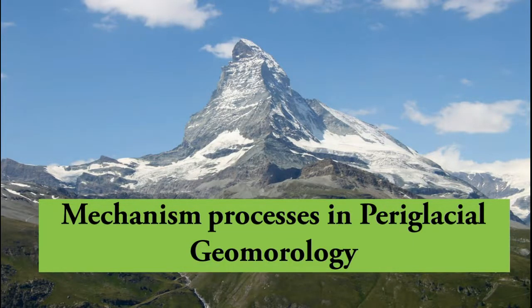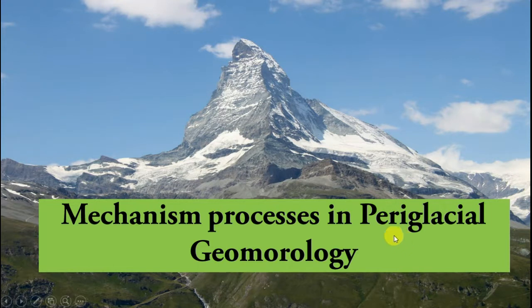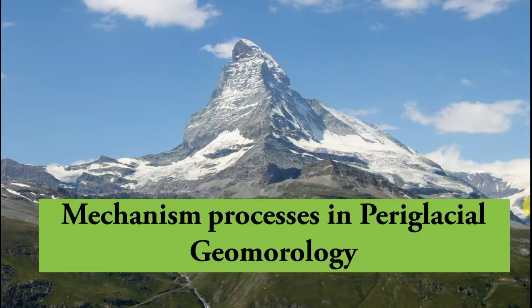In today's video we are going to talk about the various mechanisms and processes of periglacial geomorphology. The term 'periglacial' means around the ice, or peripheral to the margins of the glacier or glacial landforms. Periglacial areas are of two types: the present-day periglacial zones found in the arctic regions of Alaska, Canada, Greenland, Siberia, or Antarctica, and the fossil zones of the Pleistocene and other parts of past ice age eras.